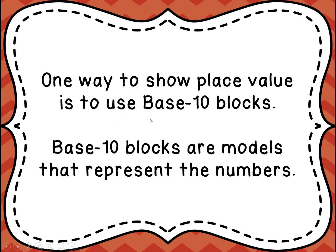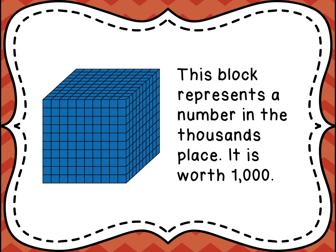One way to show place value is to use base 10 blocks, and base 10 blocks are models that represent the numbers. Here, if you take a look at this screen, you'll see this giant block. This block represents a number in the thousands place, so this particular one is worth one thousand. If you were to count up all of these little squares, you would see that there are one thousand of them in this block.